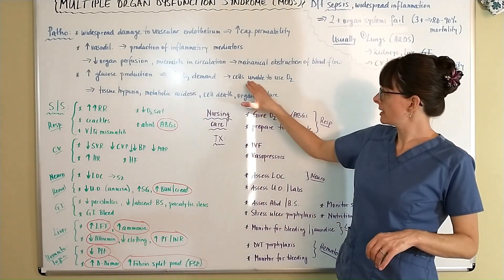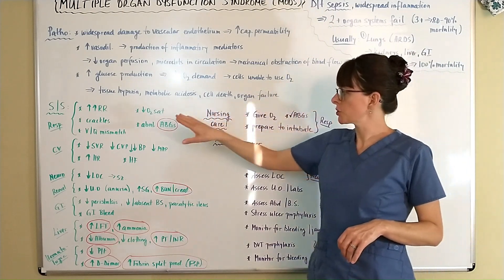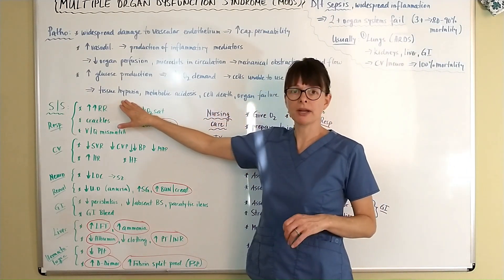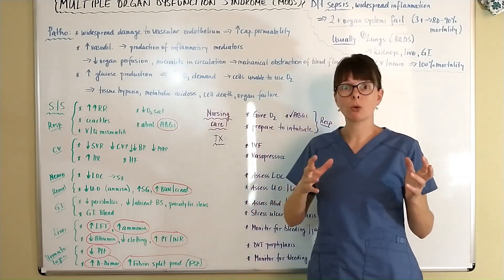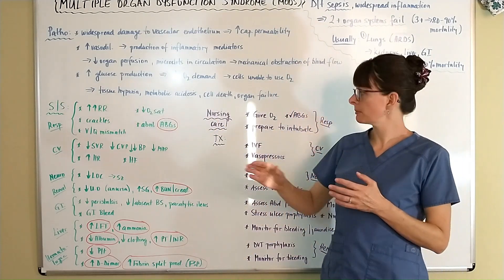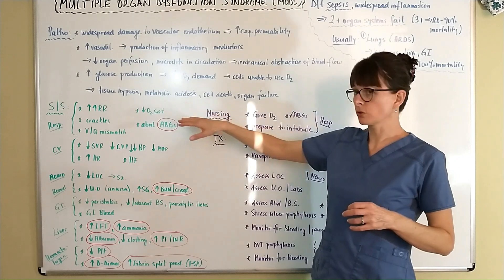Now when the cells are unable to utilize O2, tissue hypoxia occurs, body switches from aerobic to anaerobic metabolism leading to metabolic acidosis,